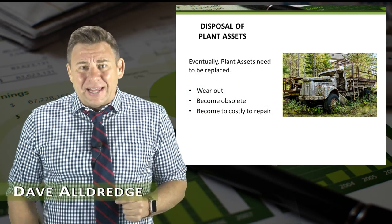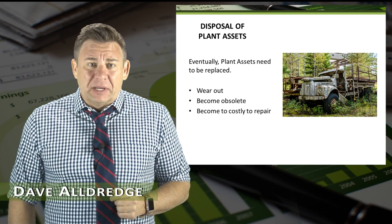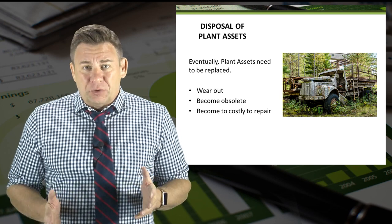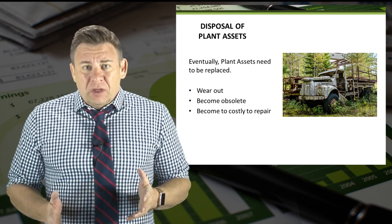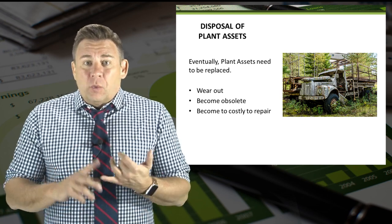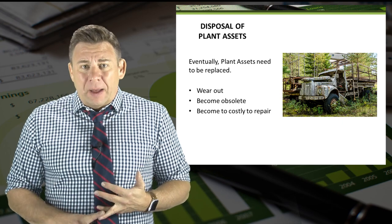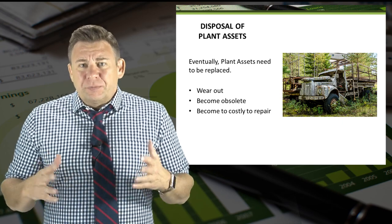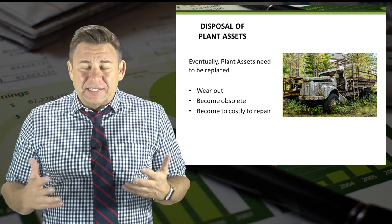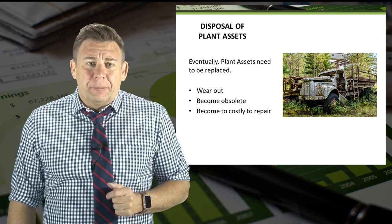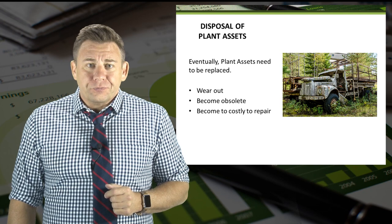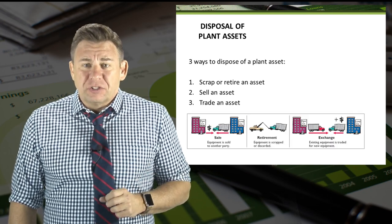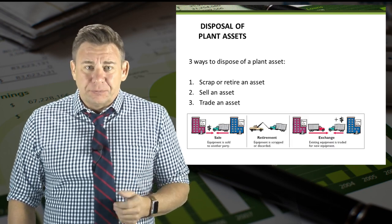Eventually, plant assets need to be replaced. The most common reasons are that they wear out, become obsolete, or become too costly to continue to repair. Generally, there are three ways to dispose of plant assets.